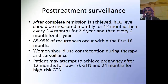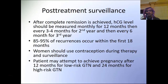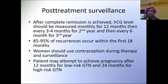Post-treatment surveillance after complete remission: beta-HCG should be measured monthly for 12 months, then every 3 to 4 months for the second year, then every 6 months for the third year. 85 to 95% of recurrences occur within the first 18 months. The risk of recurrence is 5 to 10% after achieving complete remission. Women should use contraception during therapy and surveillance. Patients may attempt pregnancy after 12 months for low-risk GTN and 24 months for high-risk GTN.